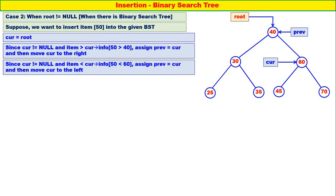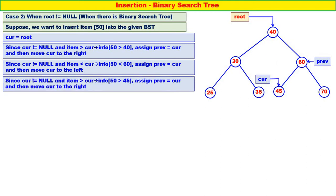Since kerr is not equal to null again and item is less than kerr of info — 50 is less than 60 — therefore priv is equal to kerr and then move kerr to the left. Since 50 is less than 60, you have to move to the left. Priv will come here and kerr will go to the left. Again, kerr is not equal to null and item is greater than kerr of info because 50 is greater than 45. Therefore priv should come to kerr and kerr should move to the right. Priv will come here and kerr — there is no right child — therefore kerr will become equal to null.